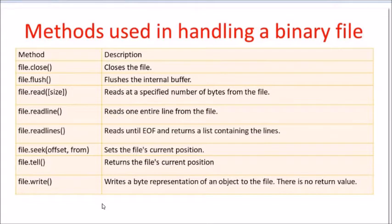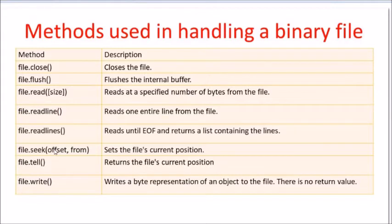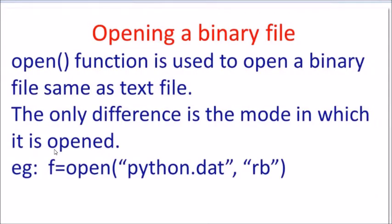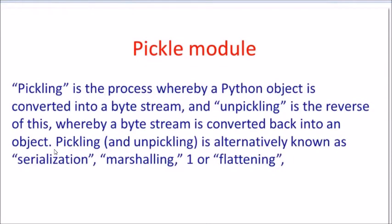The methods used in binary files are exactly the same as in text files. The only two new methods we will learn are dump() and load(). As a quick recap: close() to close a file, flush() to force the interpreter to write everything immediately, read() to read a specified number of bytes, readline() to read a whole line, readlines() to read the complete file, seek() to move the file pointer, tell() to get the current position, and write() to write in the file.